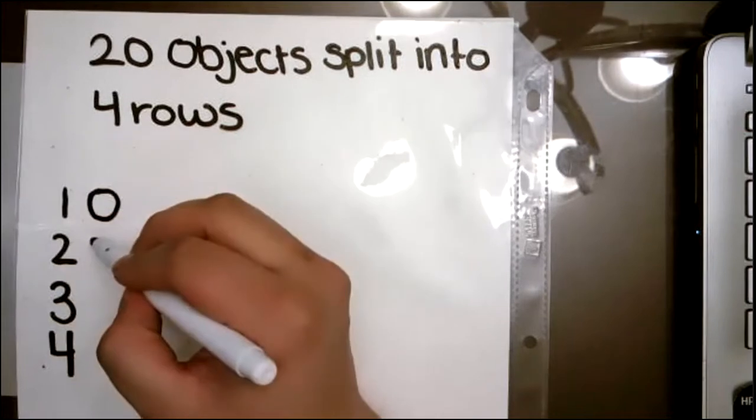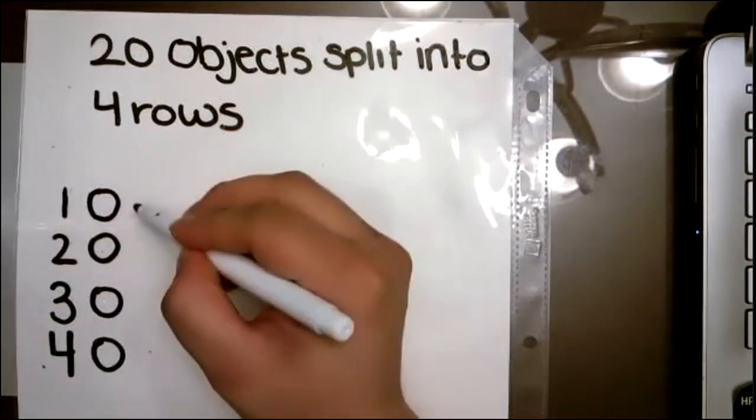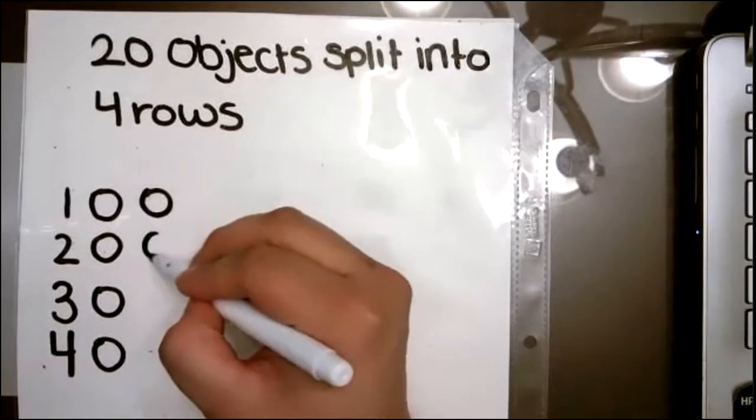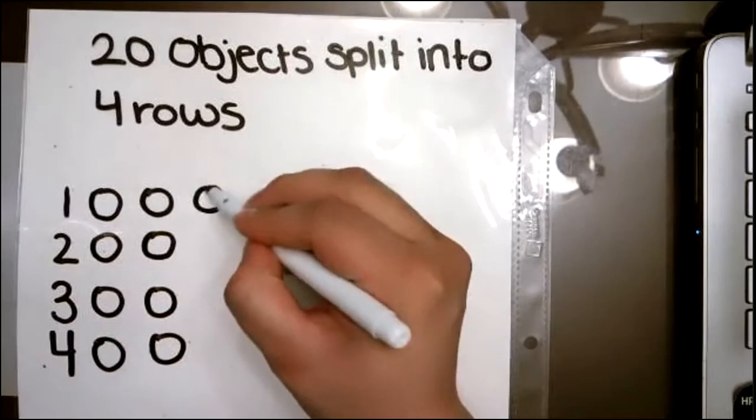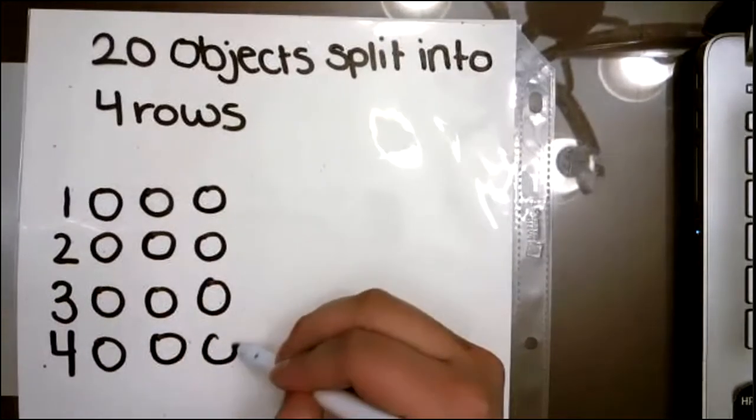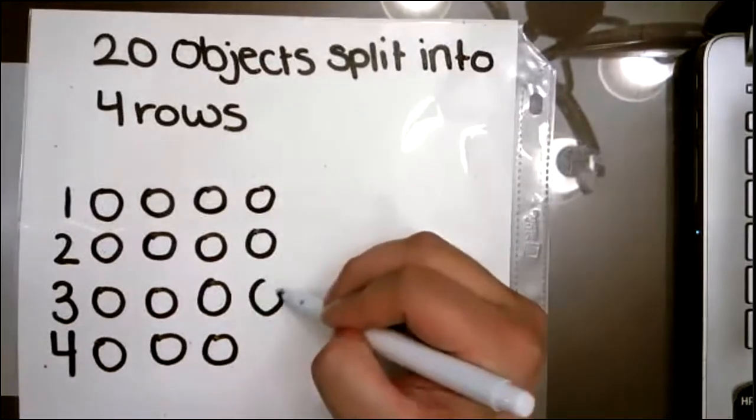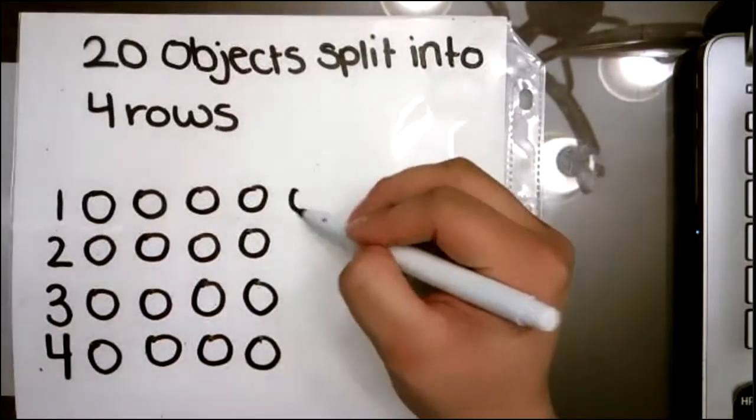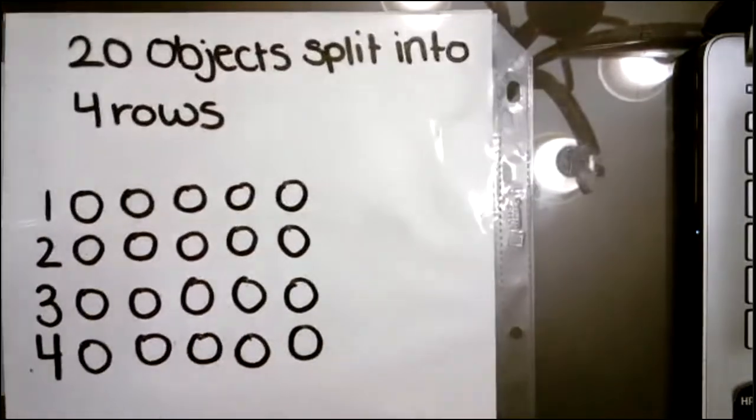So I'm going to start placing each object in each row until I get to 20. So I'm going to do circles. One, two, three, four, five, six, seven, eight, nine, ten, eleven, twelve, thirteen, fourteen, fifteen, sixteen, seventeen, eighteen, nineteen, and twenty.